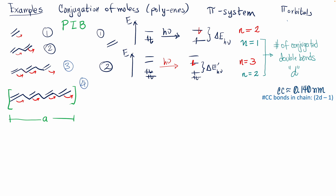Let's verify this formula for three double bonds. Counting the molecule, there are five carbon-carbon bonds. Using the formula: 2×3 − 1 = 5. That matches the number of carbon-carbon bonds we counted as the extent of the box.